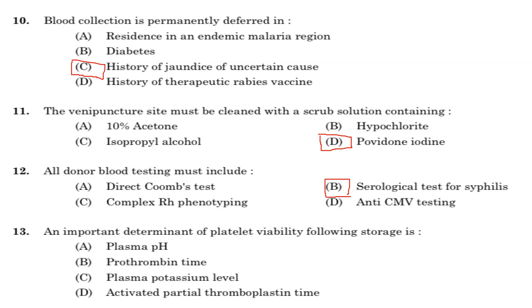Thirteenth question: an important determinant of platelet viability following storage. Option A: plasma pH. Option B: prothrombin time. Option C: plasma potassium level. Option D: activated partial thromboplastin time. Answer is Option A, plasma pH. During storage at room temperature, platelets undergo several changes known as platelet storage lesions. pH decrease is the result of platelet storage lesion, so the important determinant of platelet viability is plasma pH.